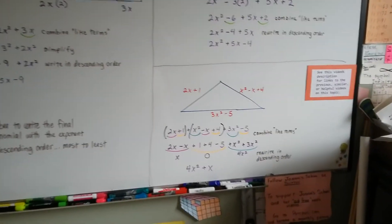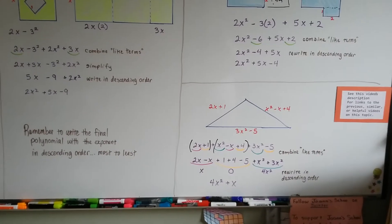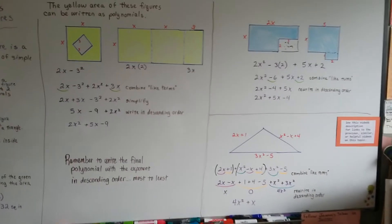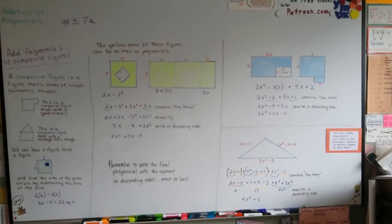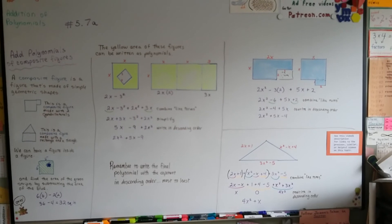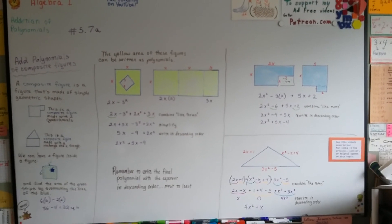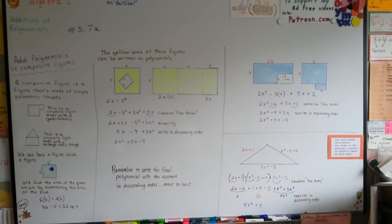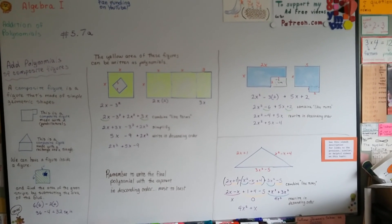There'll be a link to the video that we covered for writing in ascending and descending order in the description. But if you've been following along with each video, you should be okay. And that's how we can do composite figures and write polynomials for them. In the next video, 5.7b, we're actually going to stack the polynomials in columns and add them. I'll see you there. Bye.